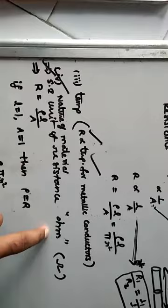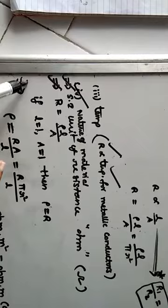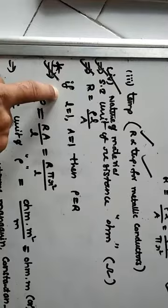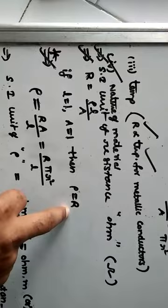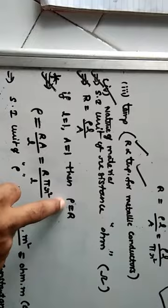Coming to R equal to rho L by A — if L is equal to one unit and A equal to one unit, then rho is equal to R. From this, we define resistivity: resistivity is numerically equal to the resistance of a conductor having length one unit and area one unit. Remember this definition.